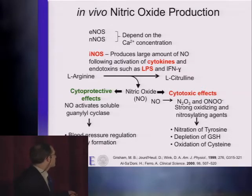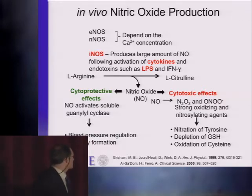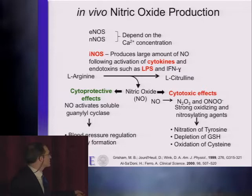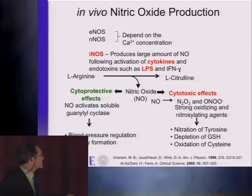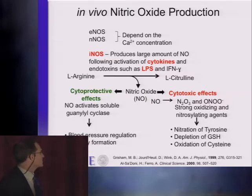L-arginine is transformed to L-citrulline and nitric oxide is released. There are some cytoprotective effects — NO activates soluble guanylate cyclase, which has effects on blood regulation and memory formation. Then there are cytotoxic effects: reactions of nitric oxide with other molecules form toxic molecules like peroxynitrate, strong oxidizing and nitrosylating agents, which end up nitrating tyrosine, depleting GSH, and oxidizing cysteine.